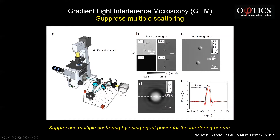This module controls the phase between one image and the slightly shifted one. With no phase shift you get the regular DIC. But once you add pi/2 more and pi/2 more, you create independent intensity images that can be combined to give a quantitative gradient, which can be integrated to become a quantitative phase map.